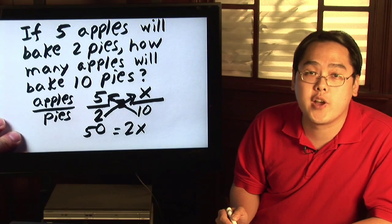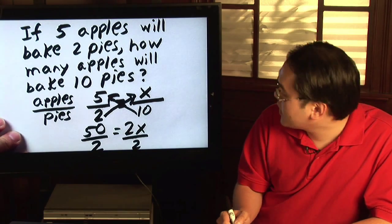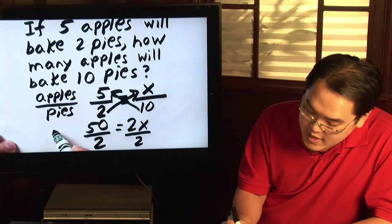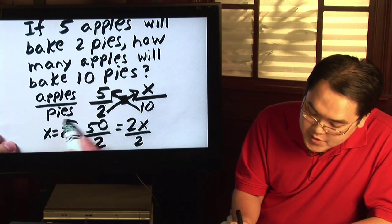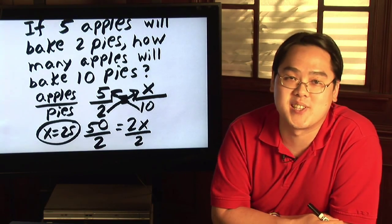All of a sudden you have a much easier equation to work with now. All you need to do here is divide both sides by two. So you're left with x equals 25. That means to bake ten pies you will need a total of 25 apples which is a lot of apples.